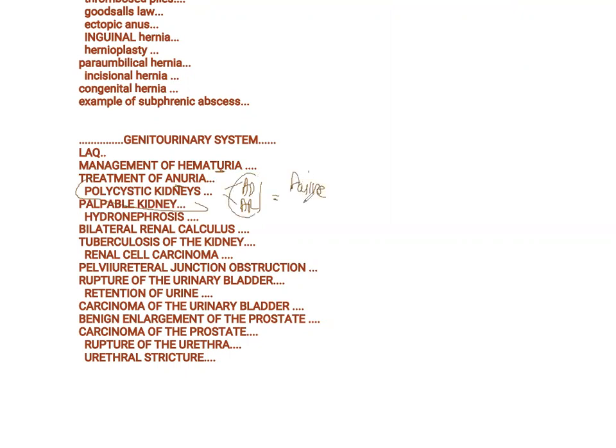Polycystic kidney — there are two types: autosomal dominant and autosomal recessive. In both, the kidneys are ultimately going to go into failure, and you ultimately require dialysis for the patient.